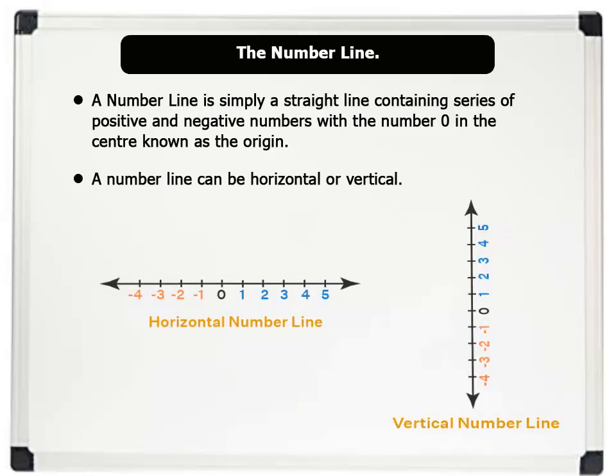Now to locate a point on a horizontal number line we start from the origin zero. Movement can either be to the right which is positive or to the left of the origin which is negative.